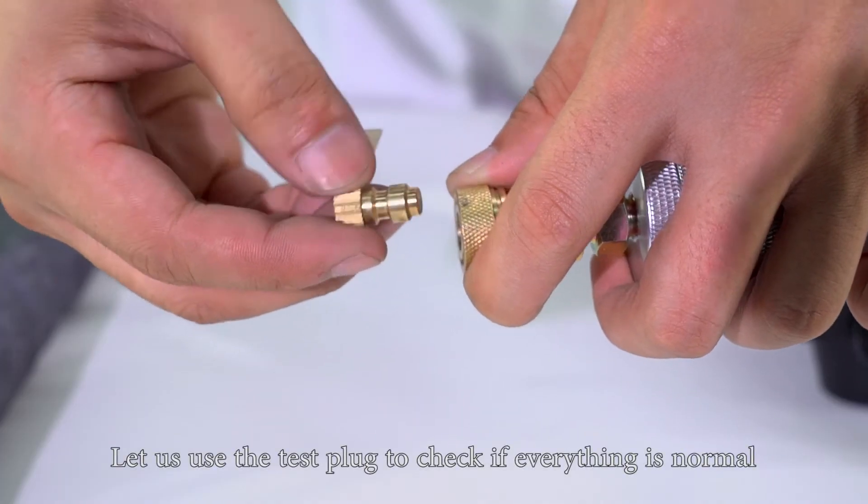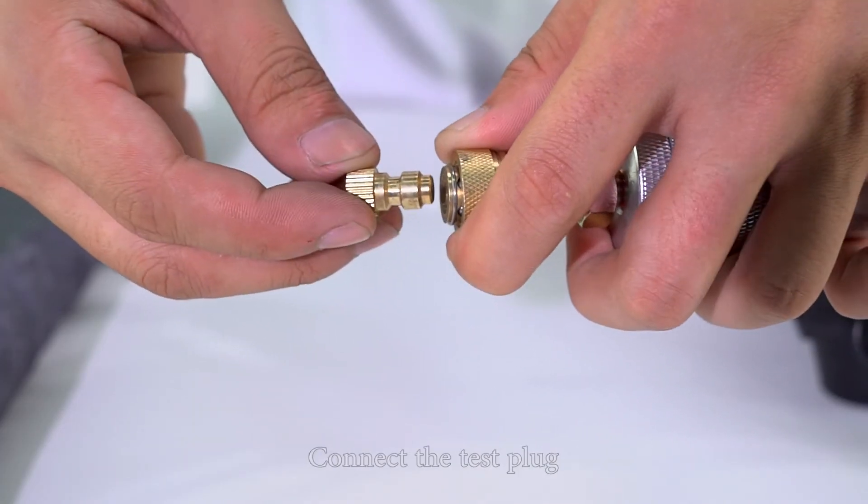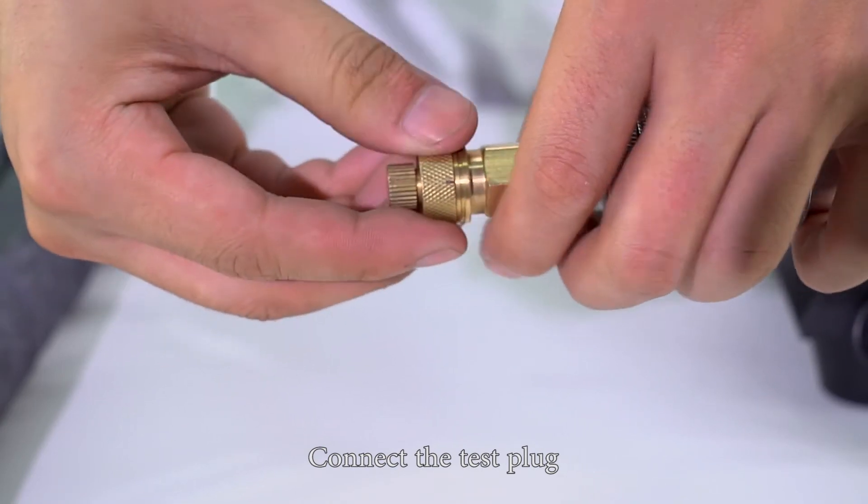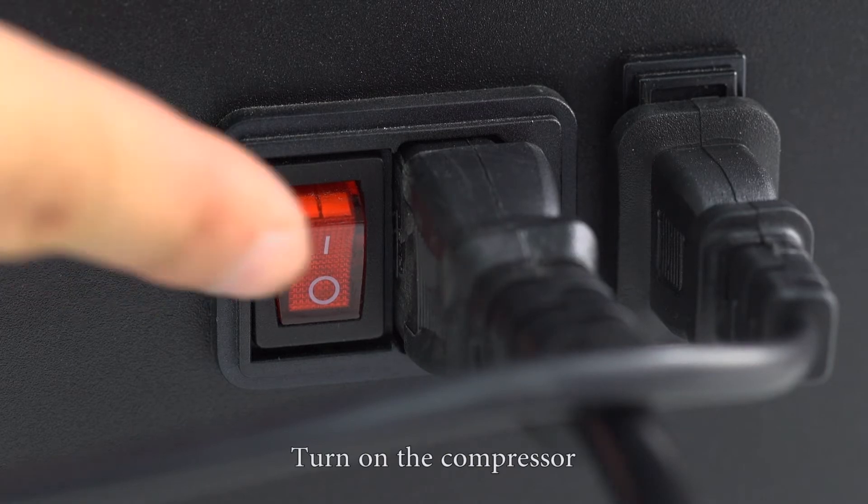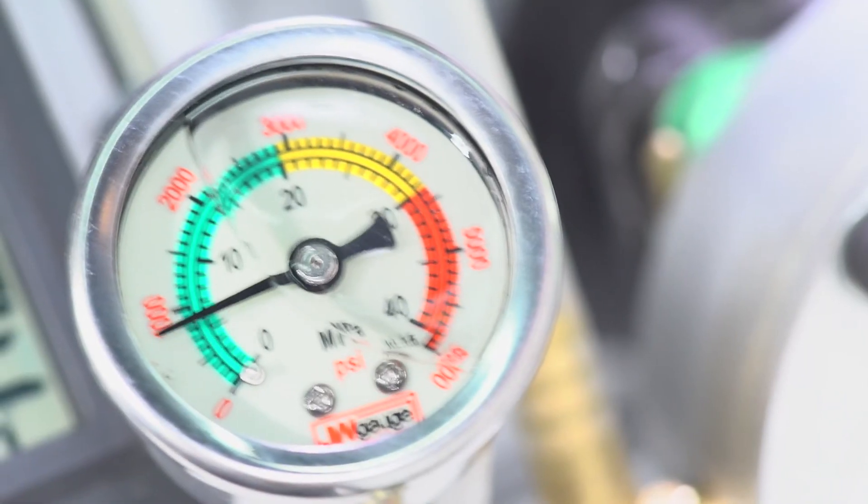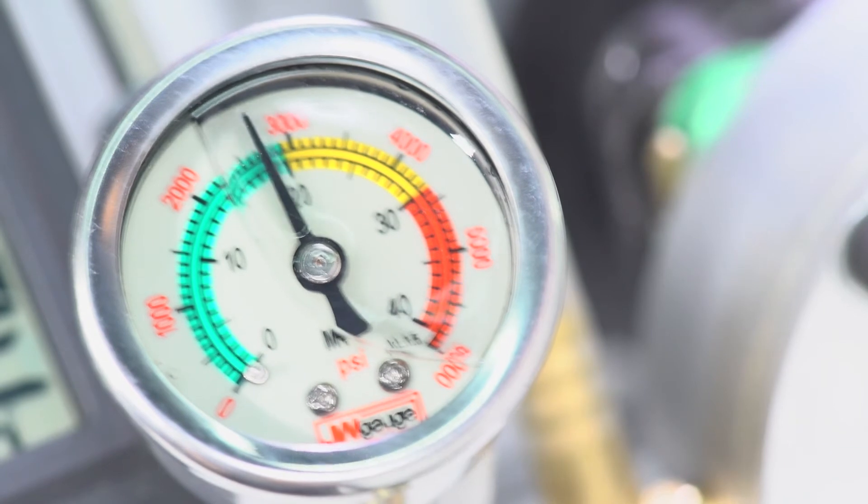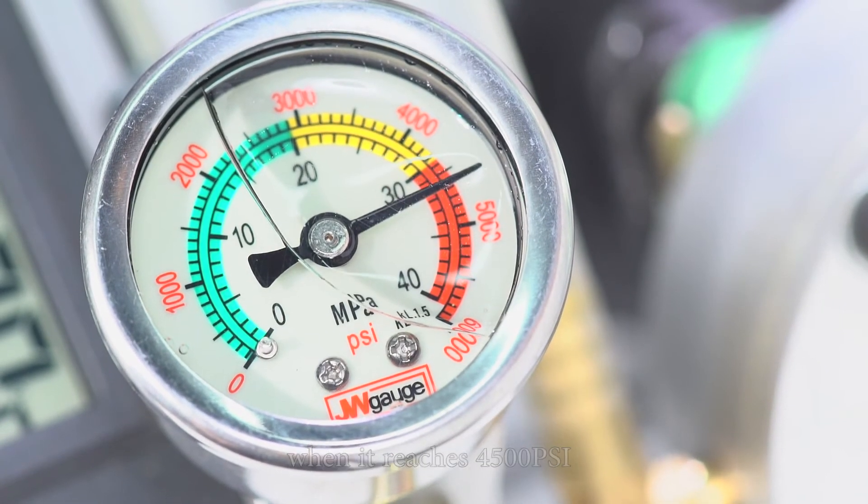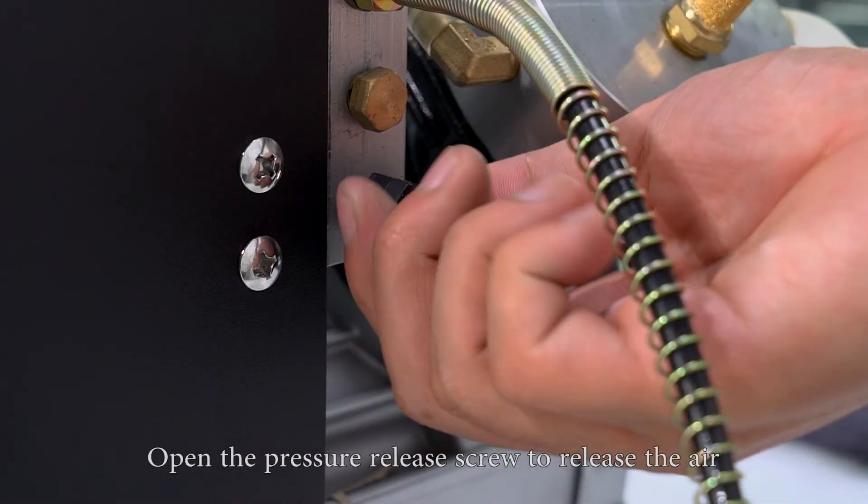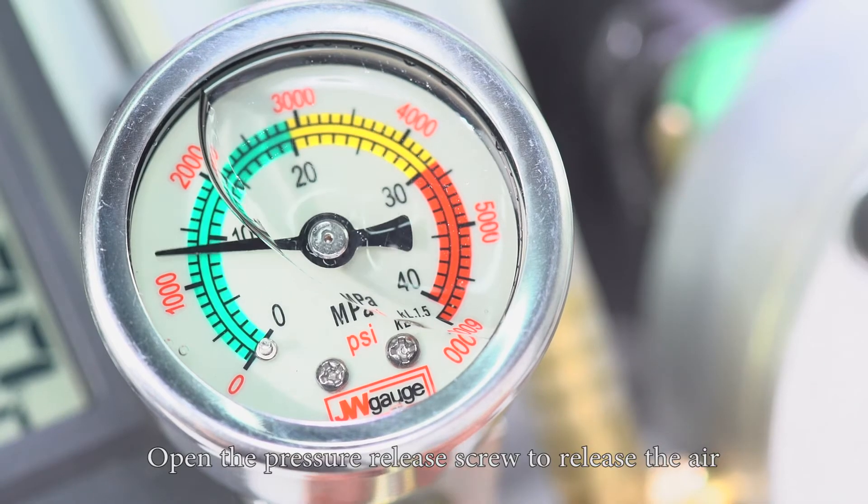Let's use the test plug to check if everything is normal. Connect the test plug and tighten the pressure release valve screw. Turn on the compressor. The air pressure is rising as expected. When it reaches 4500 psi, turn off the switch and open the pressure release valve to release the air.